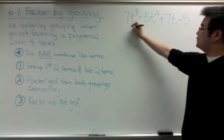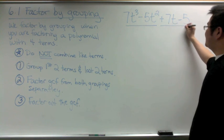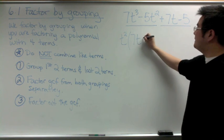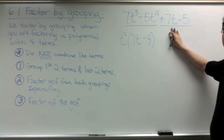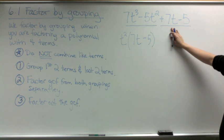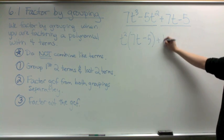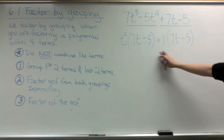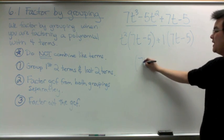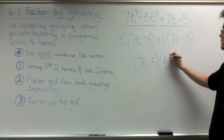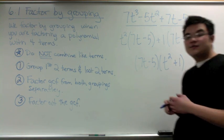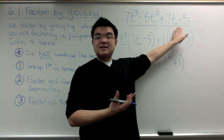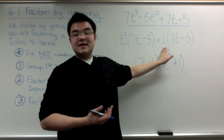In the next example, we group the first two terms and the last two terms. The GCF for the first two terms is t², leaving 7t − 5. If there is no direct GCF in the second grouping, we factor out a positive 1, which keeps the expression the same. We then factor out the common GCF (7t − 5), and what remains is t² + 1. So the result is (7t − 5)(t² + 1). When a grouping has no GCF other than 1, we always factor out 1 as part of the GCF.